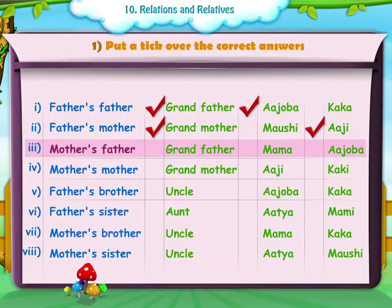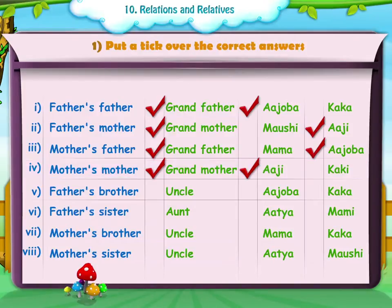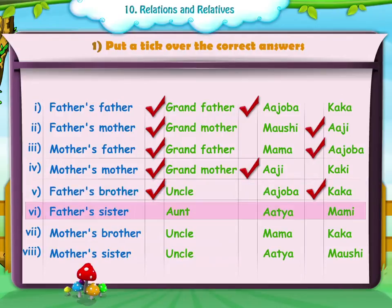3. Mother's mother: Grandmother or Adji or Kaki. 5. Father's brother: Uncle or Adzoba or Kaka. 6. Father's sister: Aunt or Adzoba or Mami.